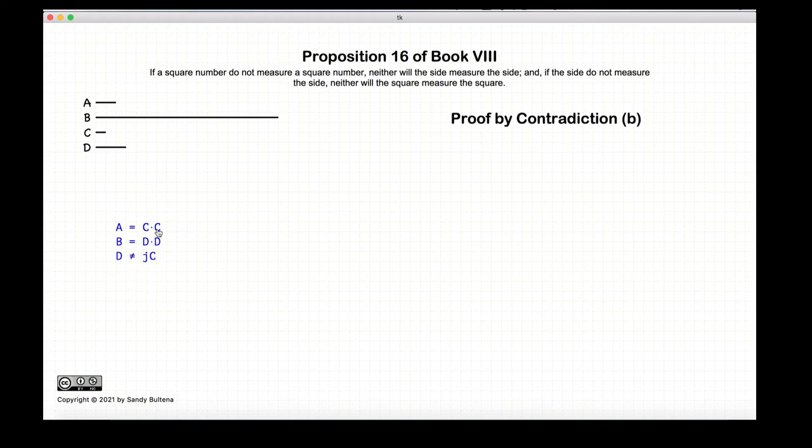The second part: we have that if C does not measure D, then A does not measure B.